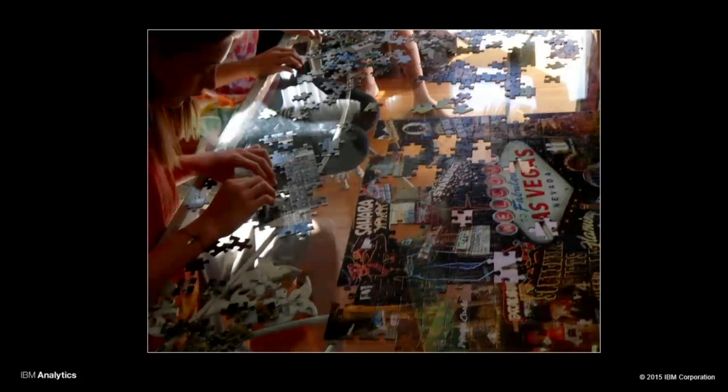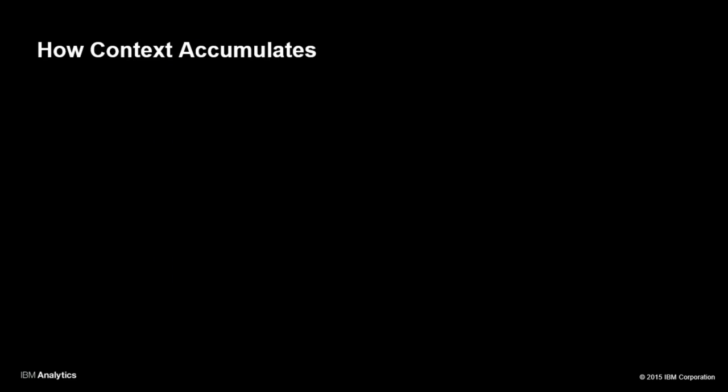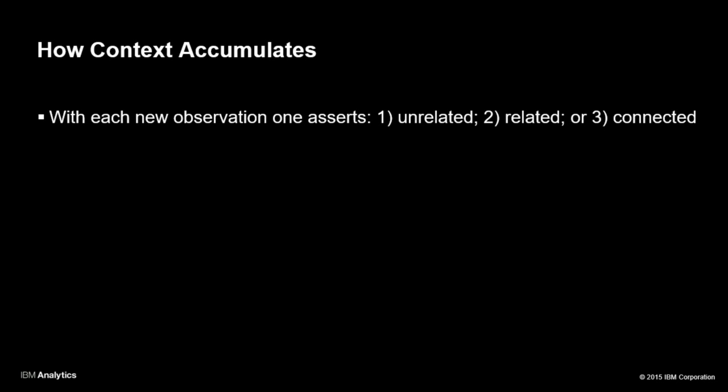This was the puzzle that had only 10% of the pieces missing. I've done these experiments without any of the edges — it still works just as well. How context accumulates, how you put that puzzle together at home, and how it happens transactionally are so similar. With each new puzzle piece, you're going to make one of three assertions: you're not really sure where it goes so you put it anywhere; it's like the red and white pieces so you put it near the red and white pieces; or you figure out right where it goes and you attach it. You favor the false negative. When's the last time you put a puzzle together and said, it doesn't fit so good, but with some glue and a hammer I can get this little bastard in there? You don't do that.